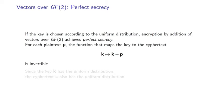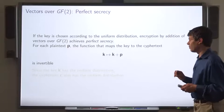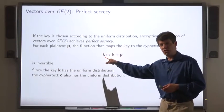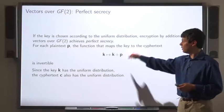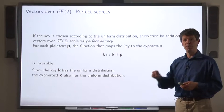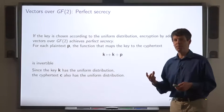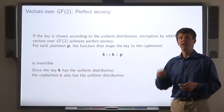For each plaintext, there's a function that maps the key to the ciphertext — namely, given the key K, it maps K to K plus P. Now this function is invertible. What that means is that if the key K is chosen according to the uniform distribution, the output will also be distributed according to the uniform distribution. That doesn't depend on which plaintext we chose. Regardless of the plaintext Alice chooses, the distribution of the output is the uniform distribution. So an eavesdropper learns nothing about the plaintext by looking at the output.